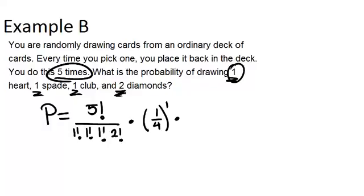Then we're talking next about spades. Again, the probability of a spade is one-fourth. We want one of those. Next, we have clubs. The probability is still one-fourth for a club because there are the same number of hearts, spades, clubs, and diamonds in the deck. And raise that to the first power.